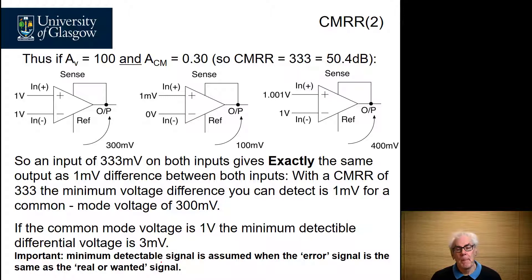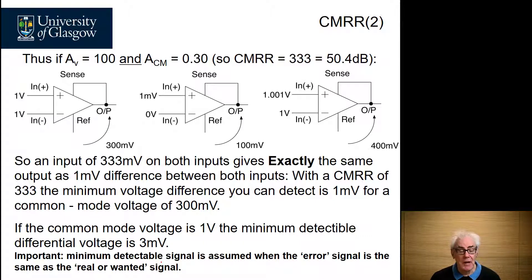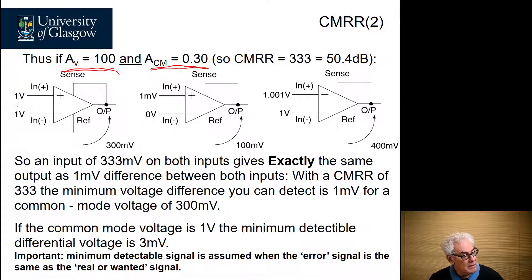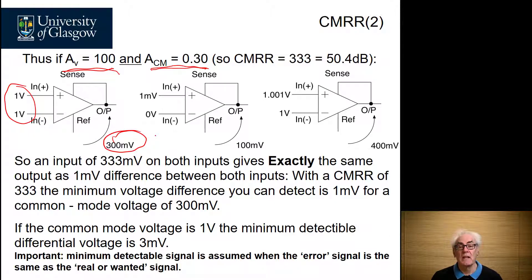Let's go back to our instrumentation amplifier and look at what happens when we have some common mode gain and differential gain. Here we've defined the differential gain as 100 times, and we've defined a common mode gain of about 0.3. Calculating that out, we have a common mode rejection ratio of 333 times, which is 50.4 decibels. Now let's apply our three scenarios. On the first one, we have one volt being applied at both input signals, and that gives rise to a 300 millivolt signal at the output, because our common mode gain is 0.3. So the average input voltage is one volt, multiplied by the common mode gain of 0.3, giving 300 millivolts output.